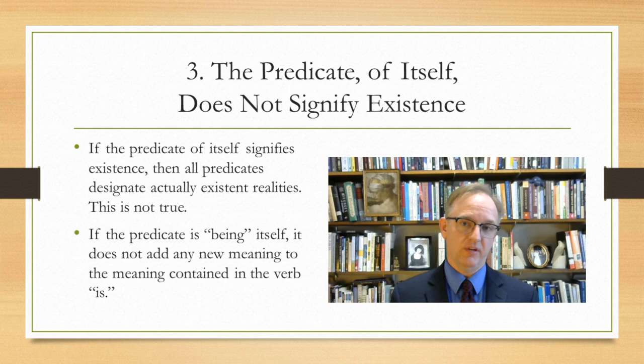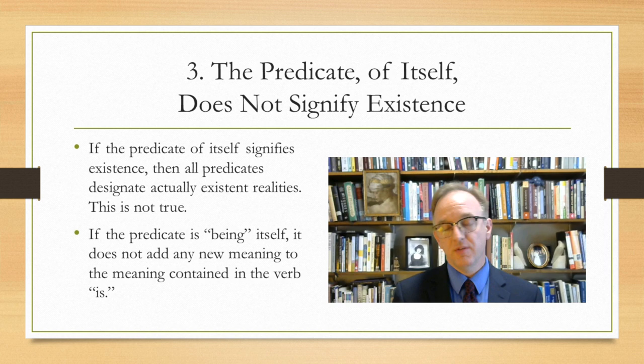The predicate could signify the existence of the subject. But in this case, the predicate would be superfluous in existential judgments. John is existing adds nothing to John is. We now face a problem. All judgments contain a judgment of existence. But this judgment of existence is found neither in the subject nor in the predicate of the judgment. Where is it then?